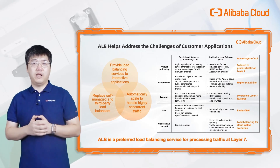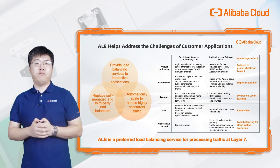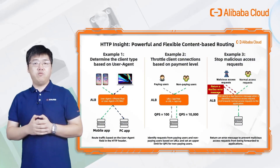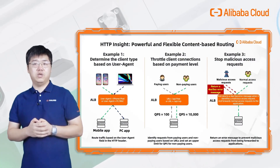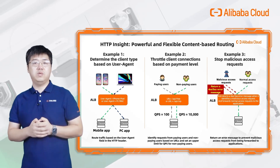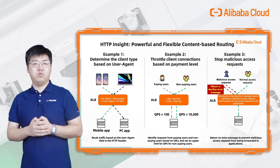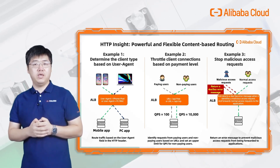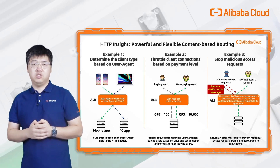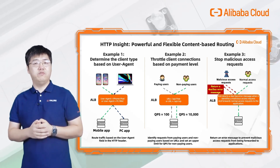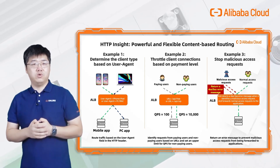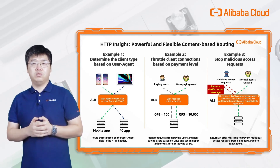Application Load Balancer is a preferred load balancing service for processing traffic at Layer 7. ALB has a very powerful and flexible content-based routing policy system — we call it HTTP Insight. ALB can route requests based on domain name, URL, HTTP header, HTTP method, source IP, and even cookies. Let's take a look at a few examples.